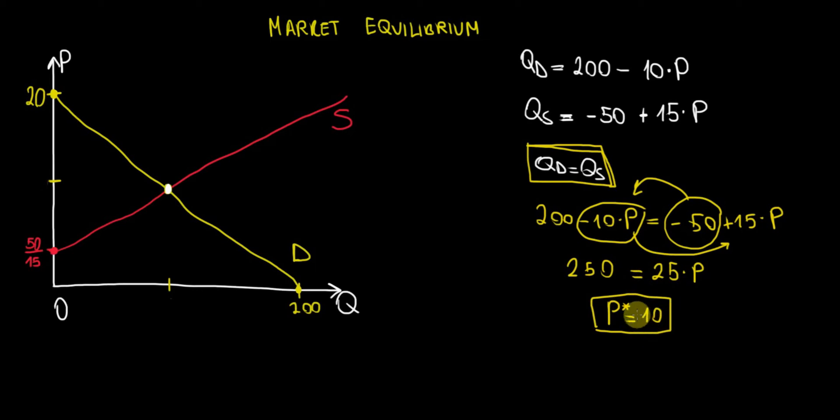With that being said, what is the quantity that's going to be sold on the market? Well we could substitute the price into either of the functions, either demand or supply. It doesn't matter because remember they are equal to each other. So for the sake of the example let's just substitute it into the quantity demanded function. So we will get 200 minus 10 times the equilibrium price of 10 and that's equal to 200 minus 100 which is 100 units equilibrium quantity.